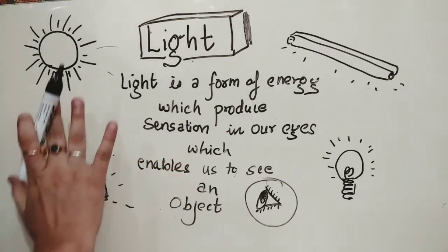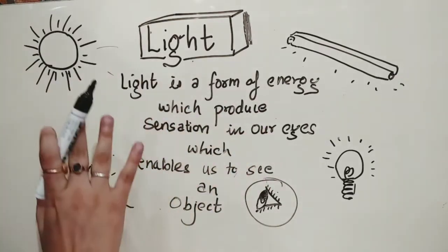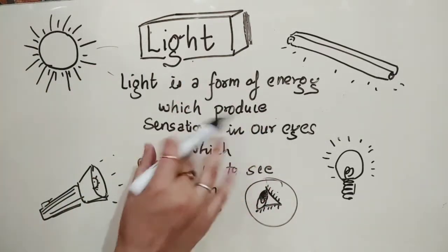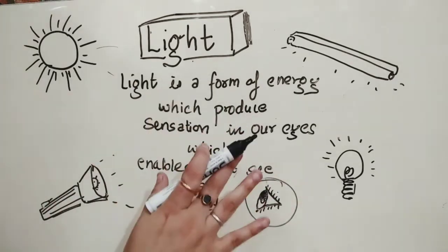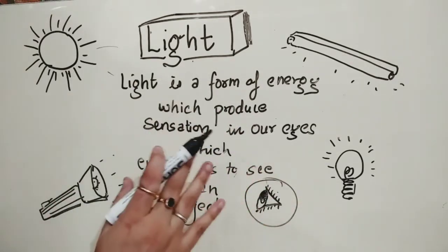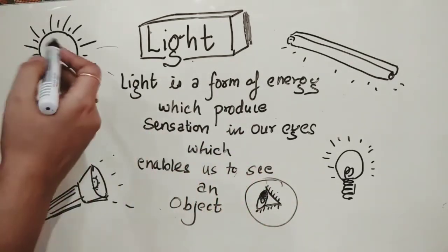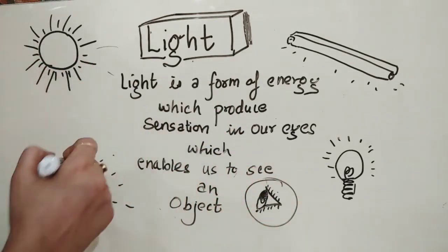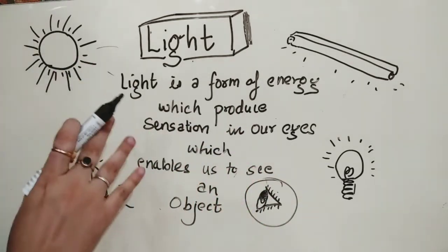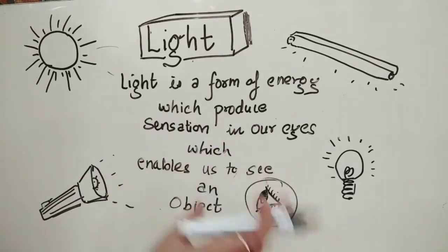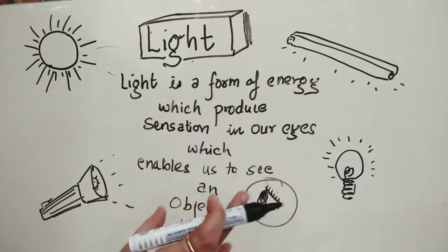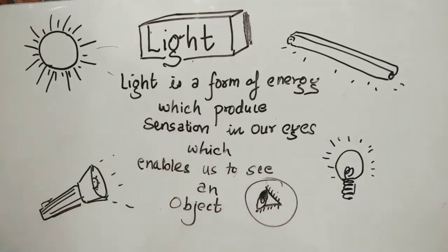Just imagine if there is no light and the room is dark — are you able to see any object? No. So, light is that sensation which enables us to see an object.